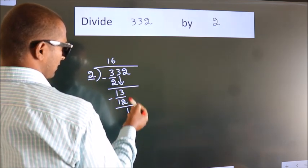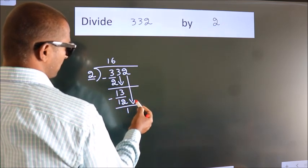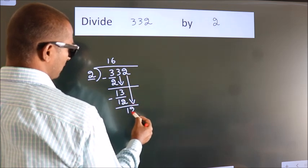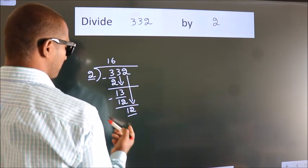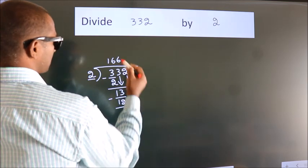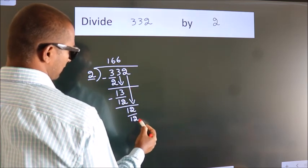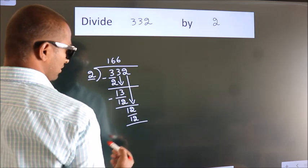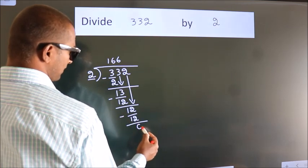After this, bring down the beside number. So 2 down. So 12. When do we get 12 in the 2 table? 2 times 6, 12. Now we subtract. We get 0.